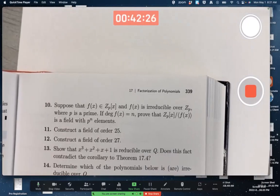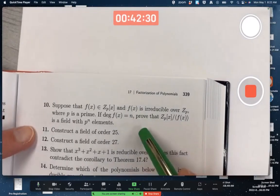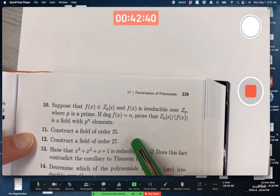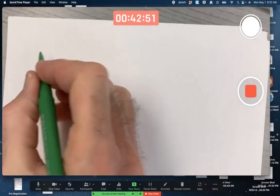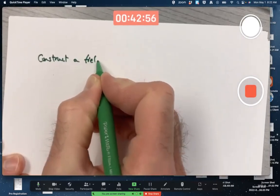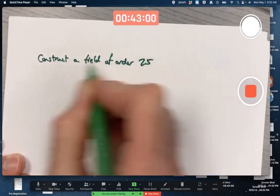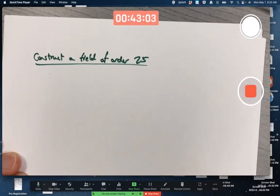Another type of problem you should be able to do that looks pretty hard when you first look at it is a problem like 11 or 12 here. Kind of a vague question. Construct a field of order 25? How? Construct a field of order 27? How? What in the world am I supposed to do? How in the world are we going to do this?